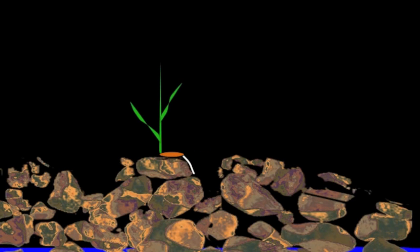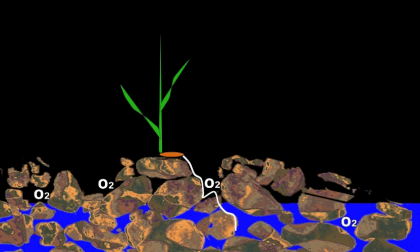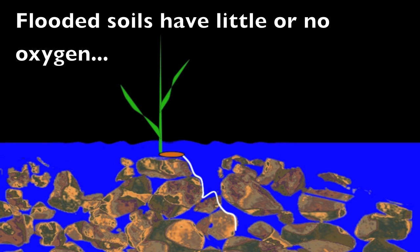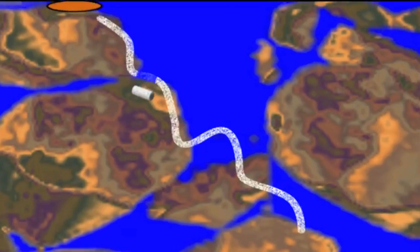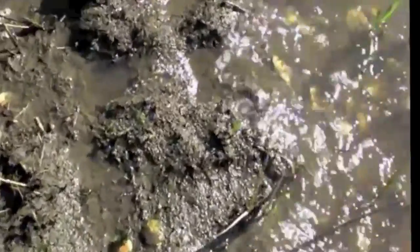Wetland plants must tolerate periodic flooding. When a plant establishes in a well-drained soil, the pore spaces between soil particles are filled with oxygen. Upon flooding, soil pores become filled with water, and respiration of microorganisms uses up oxygen faster than it can be replaced. Thus, flooded soils have little or no oxygen. Plants tolerate such low oxygen conditions by developing special airspace tissue inside the roots called aerenchyma, which creates an internal aeration pathway that allows oxygen in the atmosphere to reach the roots. This is one mechanism that allows plants to survive flooding.